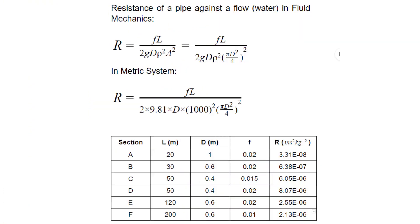I'll now give you an example. Consider this equation — it gives us the resistance of a pipe against flow, like water in fluid mechanics. This equation includes multiple parameters: F is the friction of the pipe, L is the length of the pipe, G is the gravitational acceleration, D is the diameter of the pipe, Rho is the density of the fluid like water, and A is the cross-sectional area of the pipe, which itself can be expressed in terms of diameter.